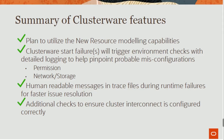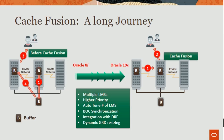Let's move on to Cache Fusion — Cache Fusion on a long journey. Before Cache Fusion modeling: private interconnect between node 1 and node 2 with buffers. From Oracle 8i to Oracle 19c: multiple LMS, higher priority, autotune number of servers, BOC synchronization, integration with DRR, dynamic GRD resizing. Cache Fusion on the other side: optimize resource master placement.